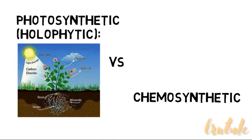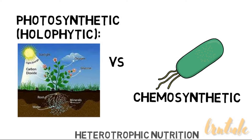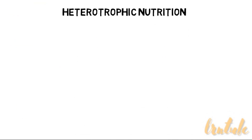Photosynthetic nutrition is when green plants manufacture their own food from simple inorganic substances like carbon dioxide, water, and chlorophyll in the presence of sunlight. Chemosynthetic nutrition is when organisms synthesize organic materials using energy derived from the oxidation of inorganic chemicals rather than from sunlight.